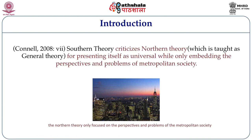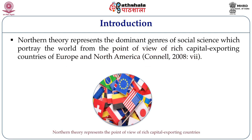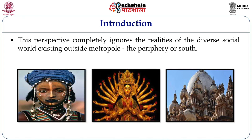In Southern Theory, the book criticizes the Northern Theory, which is taught and regarded as general theory, for presenting itself as universal while only embedding the perspective and problems of metropolitan society. Northern Theory represents the dominant voice of social science, which portrays the world from the point of view of the rich, capital-exporting countries of Europe and Northern America. This perspective completely ignores the realities of the diverse social world which exists outside the metropole — the periphery or the South.